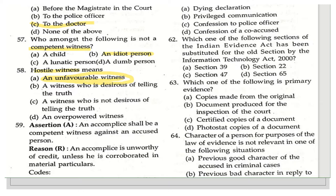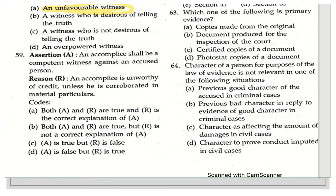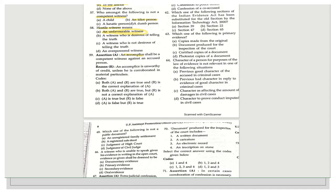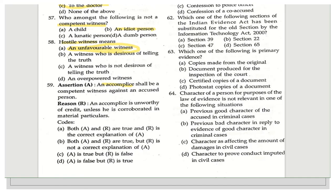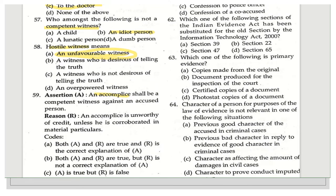The next question is an assertion-reason type: Assertion — an accomplice shall be a competent witness against an accused person. Reason — an accomplice is unworthy of credit unless corroborated in material particulars. The correct answer is that both A and R are true and R is the correct explanation, because an accomplice is not considered credible unless corroborated in material particulars, as defined under Section 133.